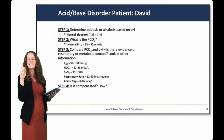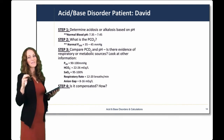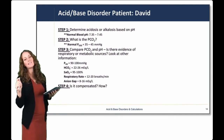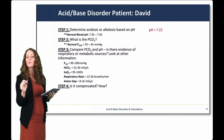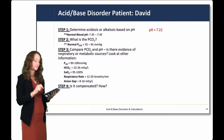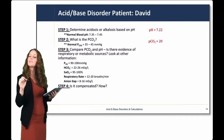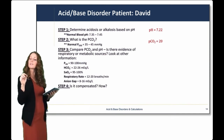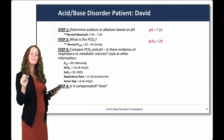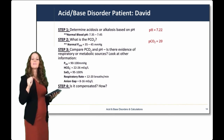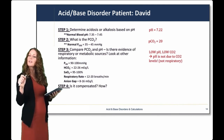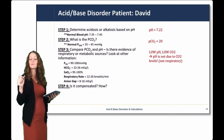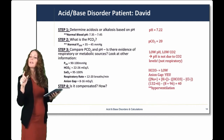Let's walk through the steps for David's labs. Step 1: determine if it's acidosis or alkalosis based on the pH. His pH is 7.22 — that's low, so he's in acidosis. Step 2: look at the CO2. Is the CO2 high, indicating a respiratory cause? No — his CO2 is actually low. So we're pointing toward a metabolic acidosis. He has a low pH and a low CO2, meaning the pH is not due to CO2 levels, so it's not respiratory. The bicarbonate is also low.